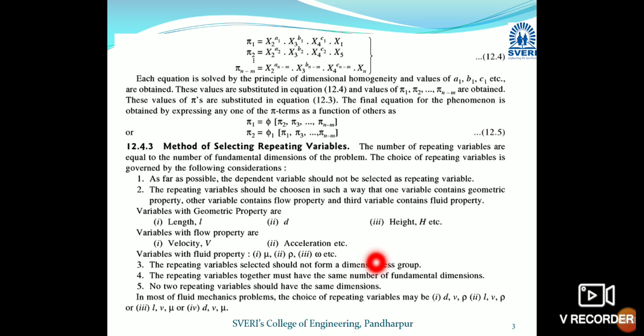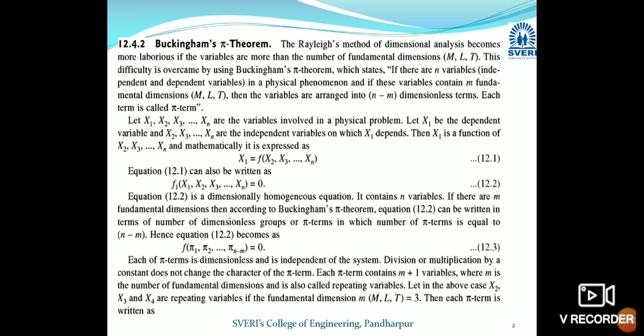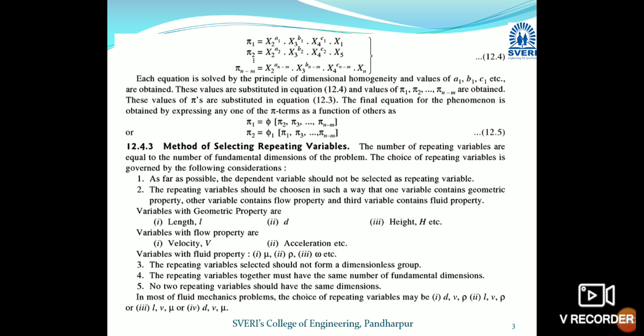No two repeating variables should have the same dimensions — for example, if length L is selected, diameter should not also be selected. Also, the repeating variables selected should not form a dimensionless group among themselves. Typical combinations are: diameter, velocity, density; or length, velocity, density; or length, velocity, viscosity; or diameter, velocity, viscosity.